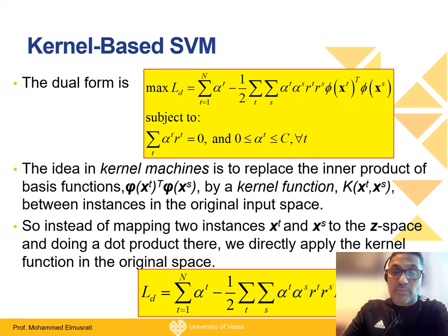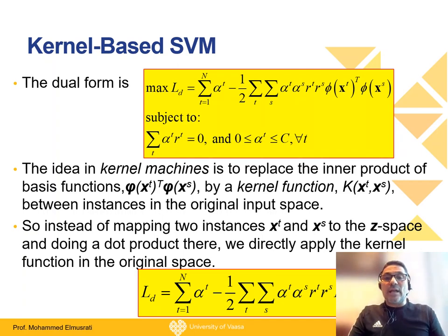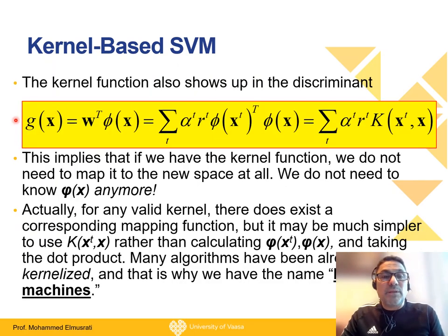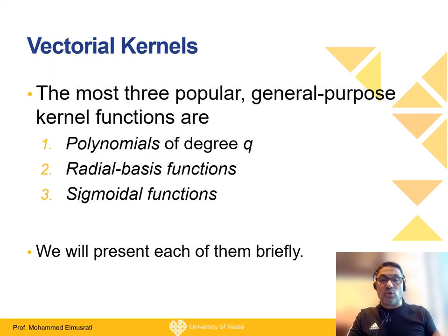Now we can build our discriminant function. It will be the summation of α_t, and r_t in the two-class case can be plus 1 or minus 1. Then we have this kernel function, and in this kernel function we give only those entries where this alpha is not 0. Let us see with a simple example how this could work.